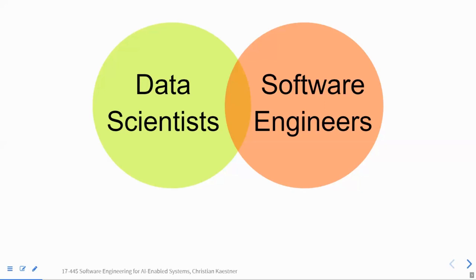I'm coming from a software engineering background, and I expect very little — actually none — data science background from you, so we're going to teach this from scratch. I'm always going to be biased a little by the software engineering view, but I'm trying to give you a perspective of how a data scientist might approach this. We won't go to a level of fine-tuning deep neural networks; we want to think about how we can integrate models into a system and support data scientists.